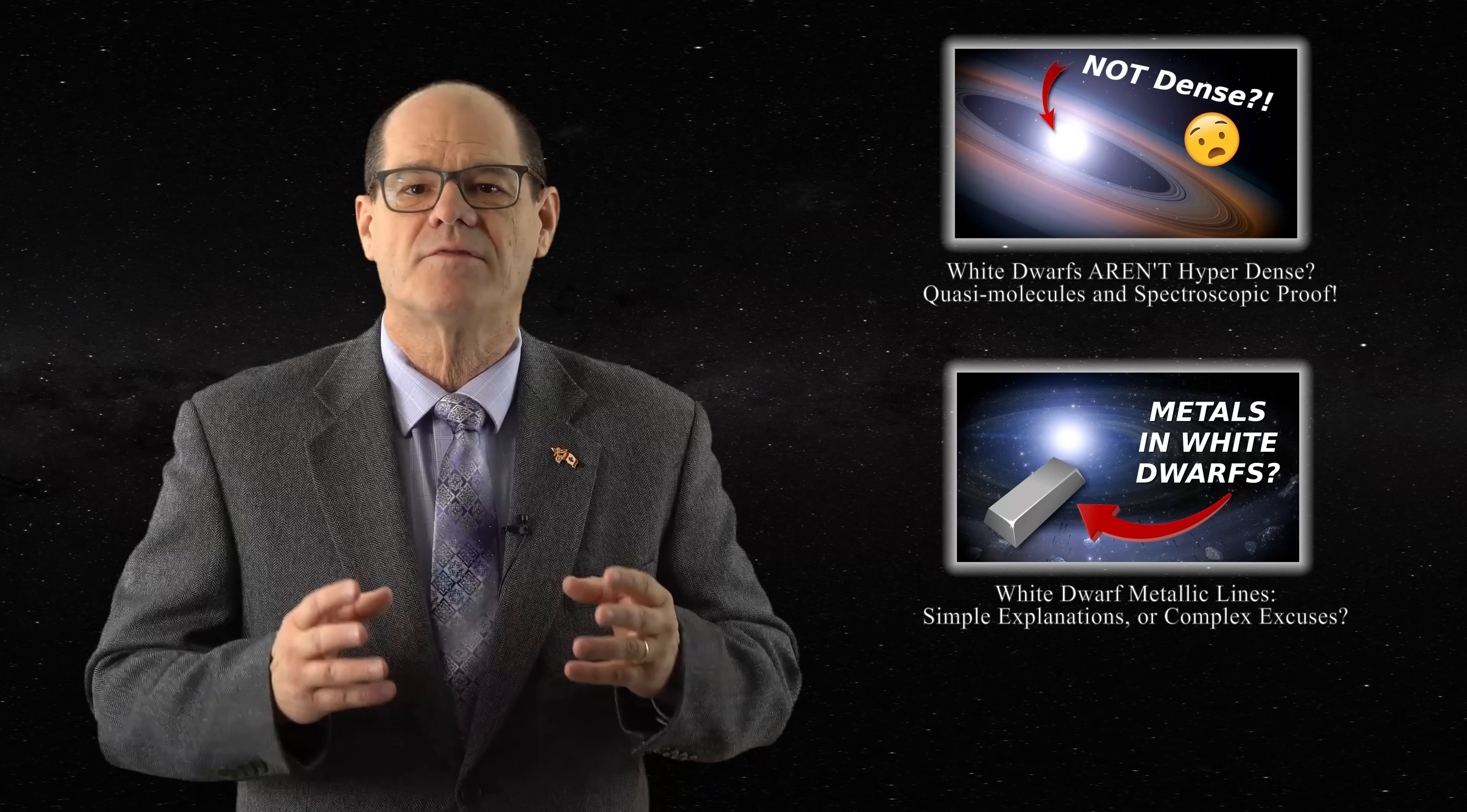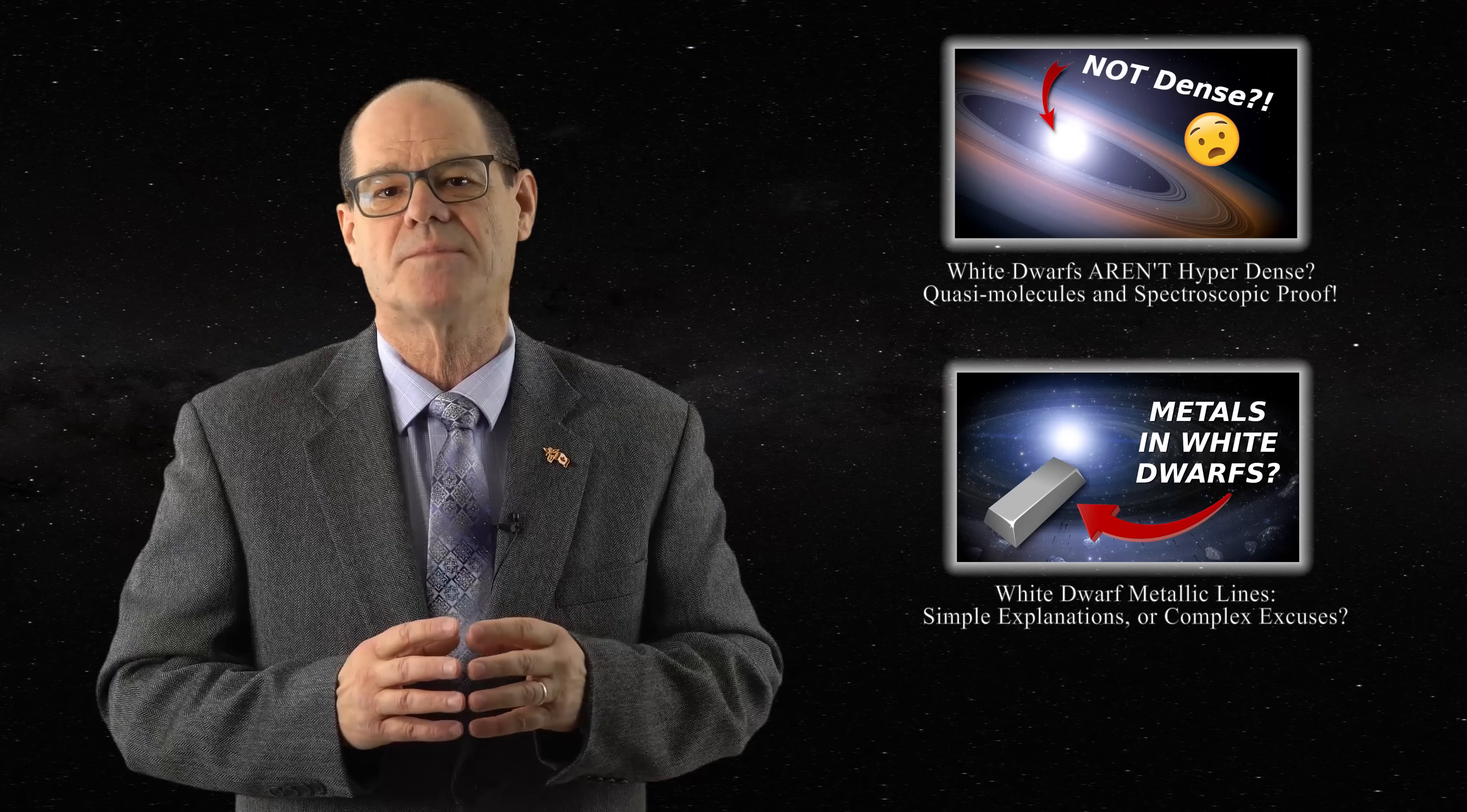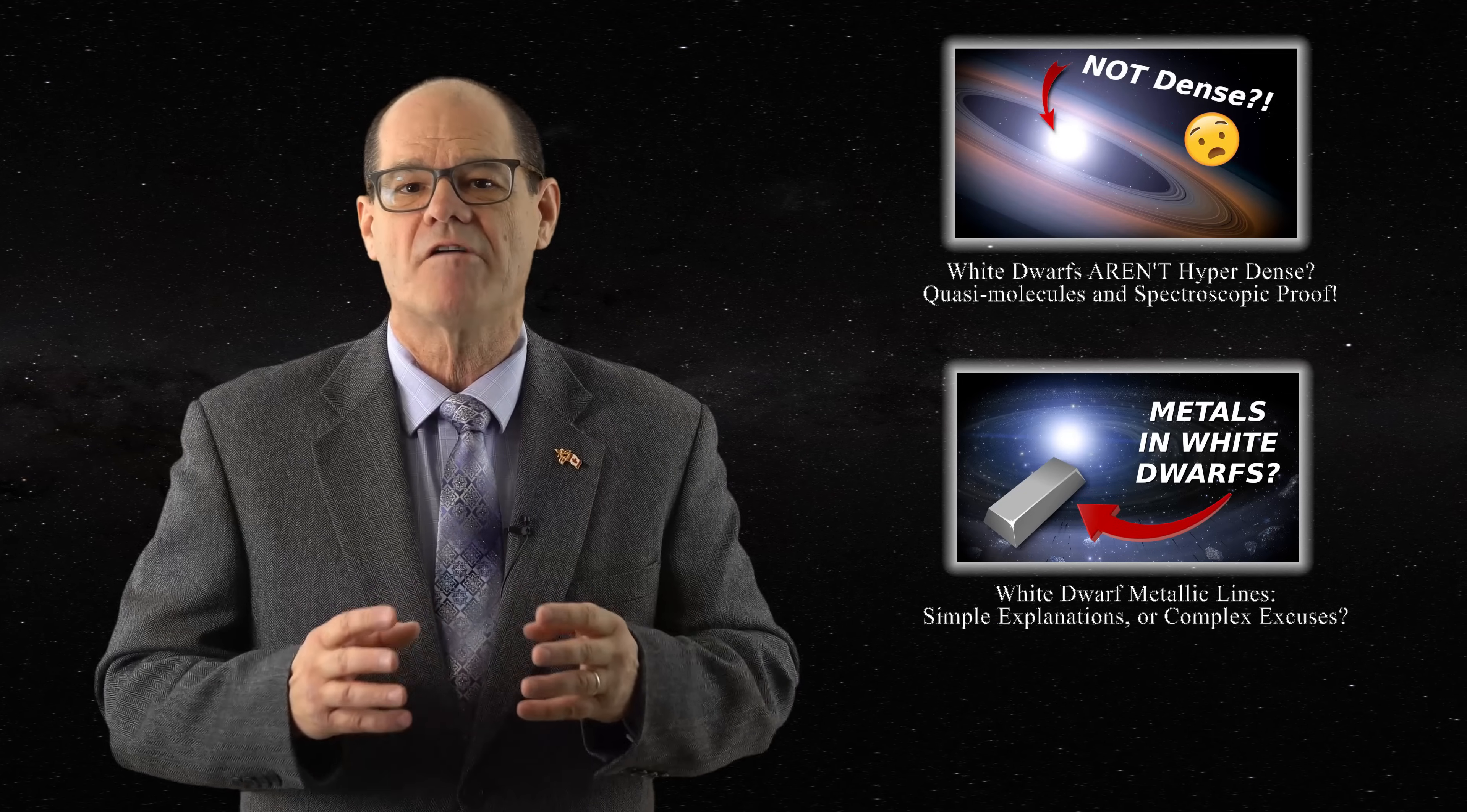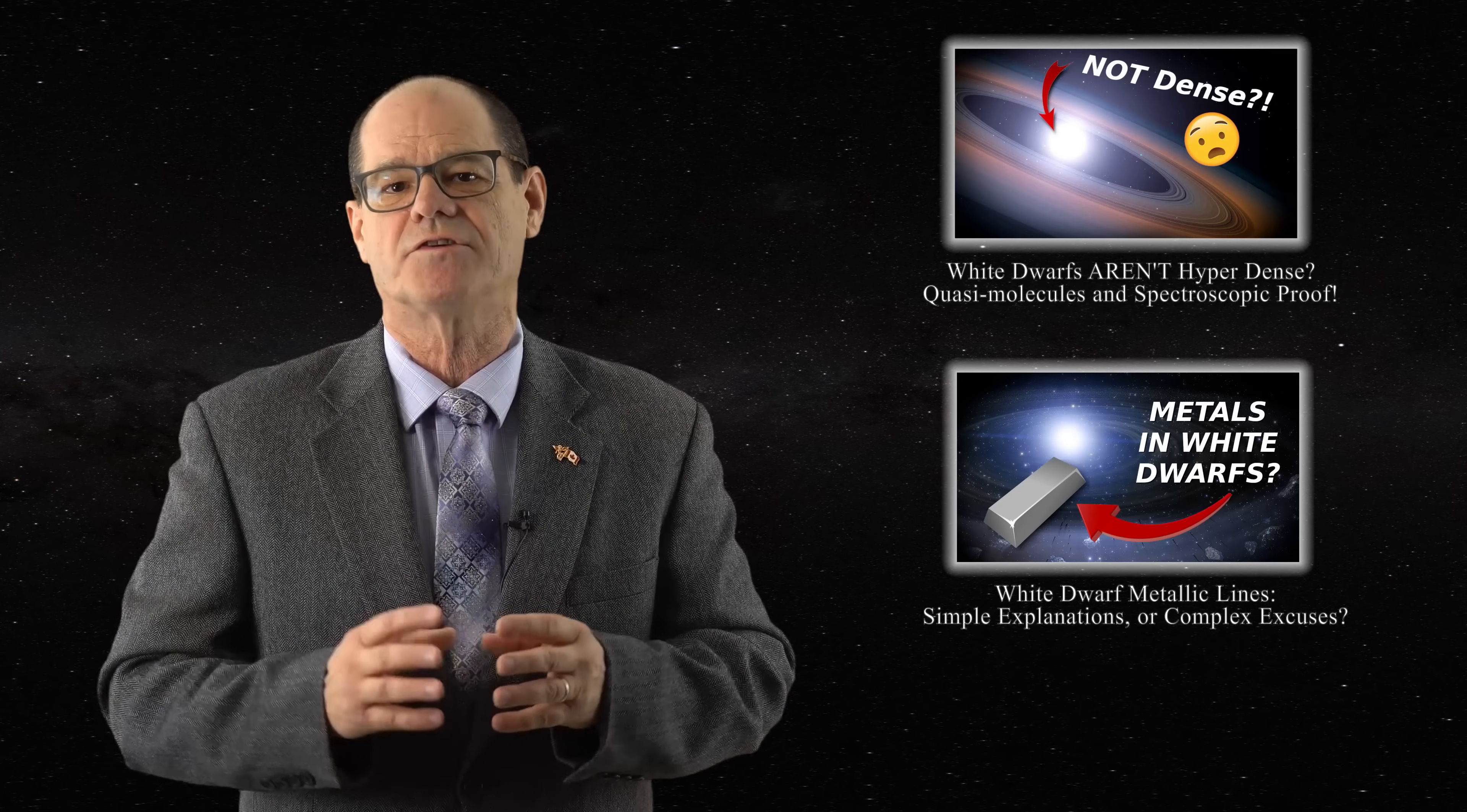Sixth, we noted that the shifts of metallic lines do not support the results obtained with hydrogen lines. As a result, astronomers have moved the origin of the troublesome metallic lines off the surface of the white dwarfs.